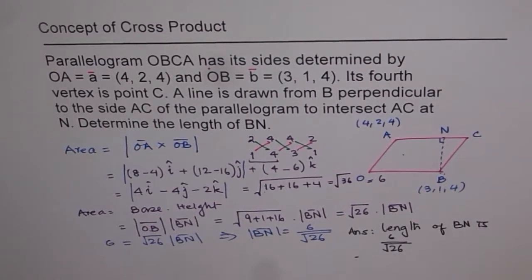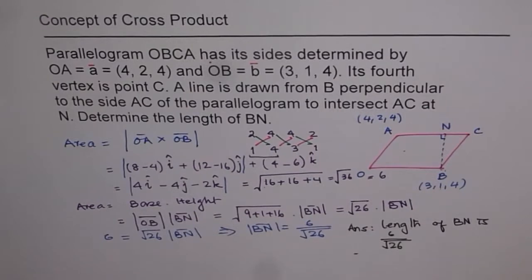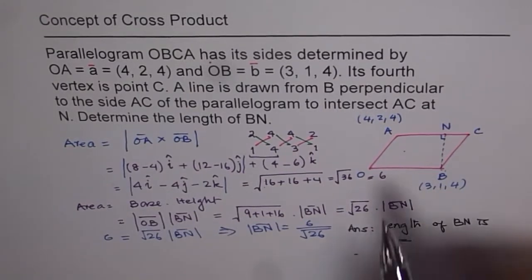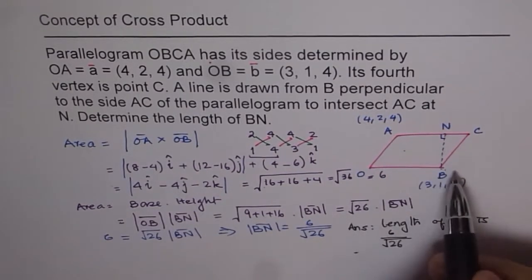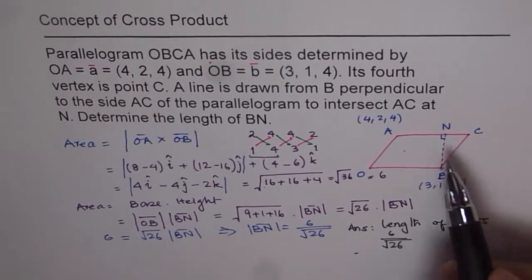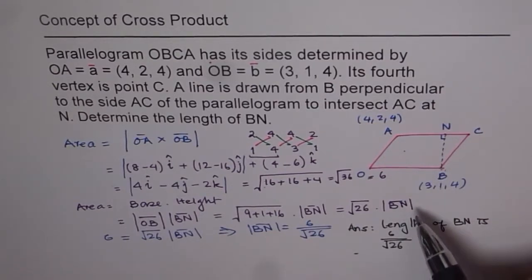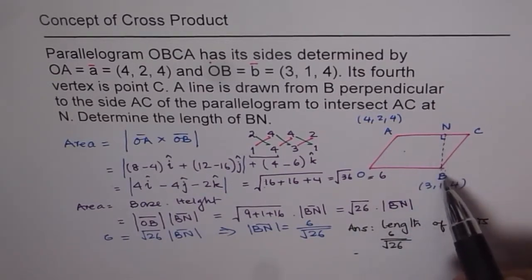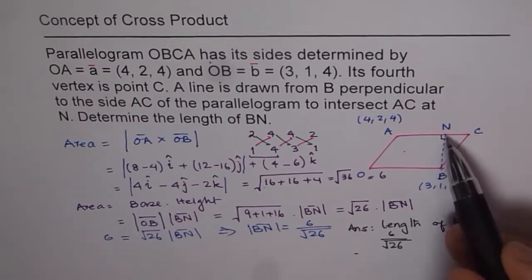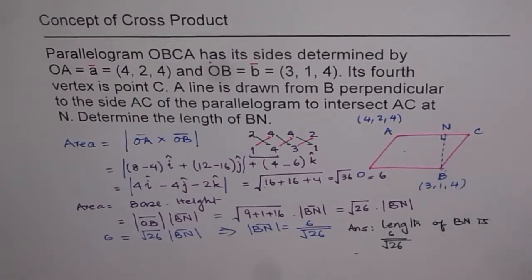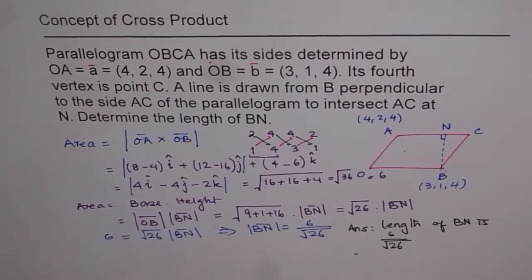So that is how this question is to be done. So as you can see, what we did was we found area of parallelogram using two different methods. One was cross product magnitude, and the other one was base times height. Now since this is the height, we equated the two and calculated the height. That is the strategy. I hope you appreciate it. Thank you.